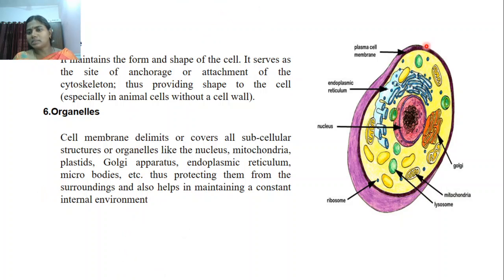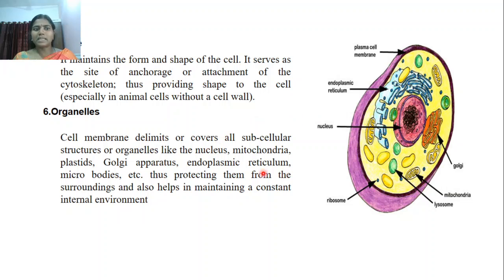Here we see the nucleus structure of a cell. The reticular structure is the endoplasmic reticulum, along with the Golgi bodies, mitochondria, lysosome, and ribosomes — these are all the cell organelles. They are covered by the plasma membrane. It protects them from surroundings and also helps in maintaining the constant internal environment.